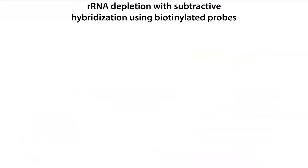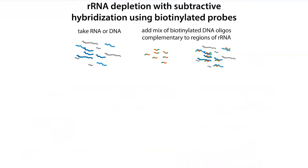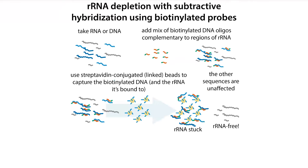You take your RNA, add a mix of biotin-labeled DNA oligos complementary to regions of rRNA — either custom-designed or from a kit. These oligos bind to the rRNA and carry the biotin label. Biotin sticks very tightly to streptavidin, and we have magnetic beads with streptavidin conjugated to them. This allows us to capture the biotin-labeled DNA and the rRNA it's bound to, and then remove those beads to get rRNA-free solution.